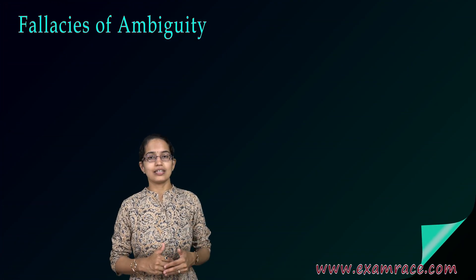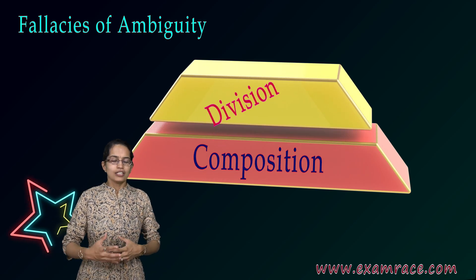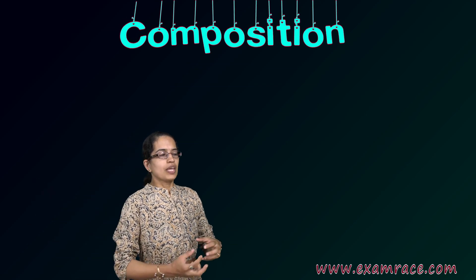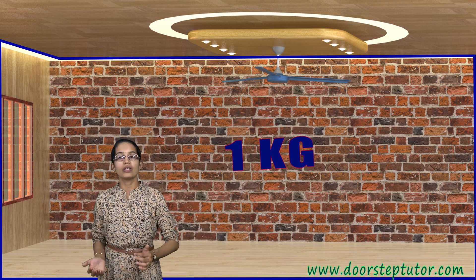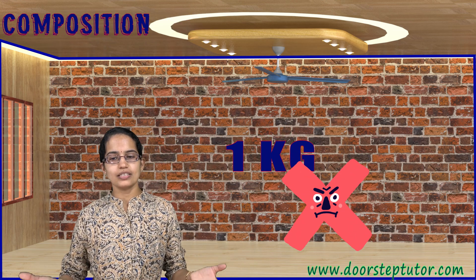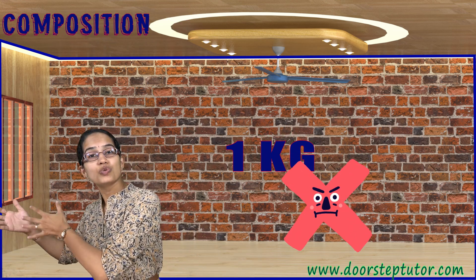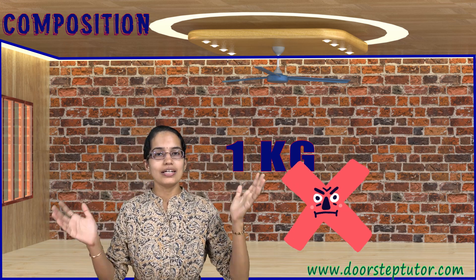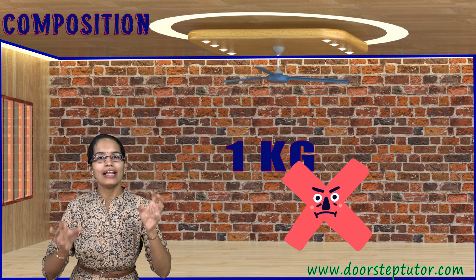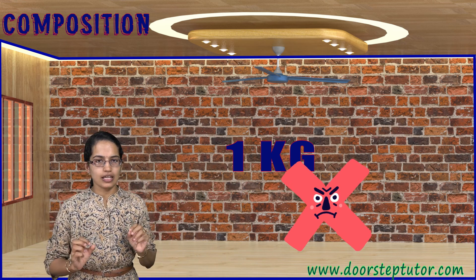The last two are pretty interesting: composition and division. Composition — let's say this room is made up of bricks, and each brick weighs one kilogram. So what happens is, I say this room weighs one kilogram, but that is an incorrect way because you are composing things — bringing the parts to the whole — and that relationship is ignored. That's where we understand there is a fallacy of composition.